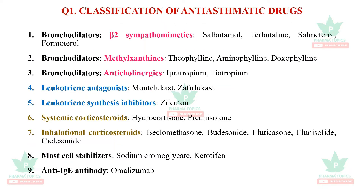The first question is classification of anti-asthmatic drugs. It includes nine classifications. The first three are bronchodilators: beta-2 sympathomimetics, methylxanthines, and anticholinergics. The next two relate to leukotrienes: leukotriene synthesis inhibitor and leukotriene antagonist. Then corticosteroids, which may be systemic or inhalational. Finally, mast cell stabilizers and anti-IgE antibody omalizumab.